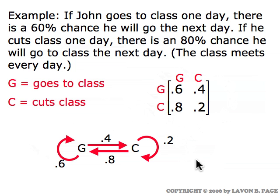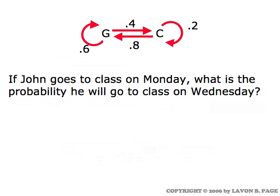This is what the transition matrix looks like, and this is what the transition diagram looks like. Going to class means next time a 60% chance of going and a 40% chance of cutting. If he cuts class, there's an 80% chance of going the next time and a 20% chance of cutting. The transition matrix and the transition diagram contain exactly the same information. Now let's pose this question: suppose John goes to class on Monday — what's the probability he will go to class on Wednesday, two days later? We can look at the transition diagram and know the probabilities for Tuesday, but in this question we're looking two days down the line, so how can we track him for two days?